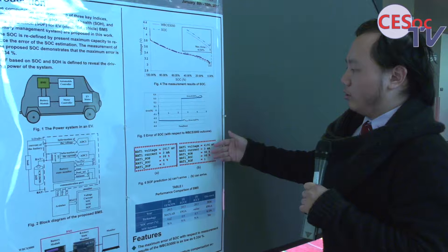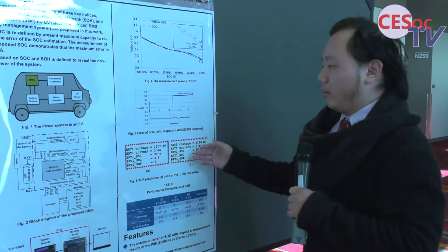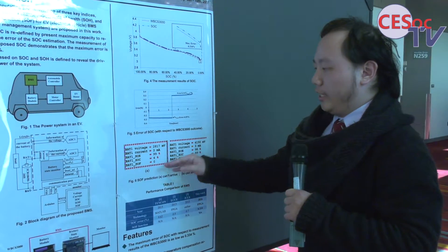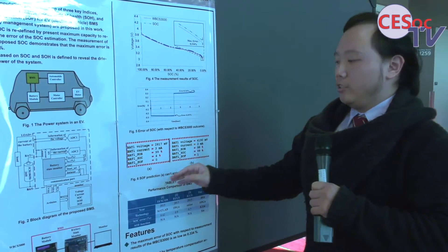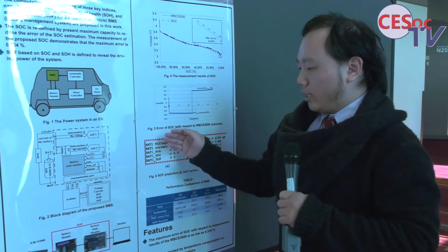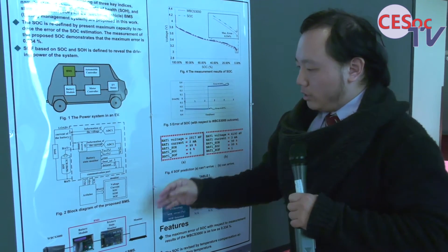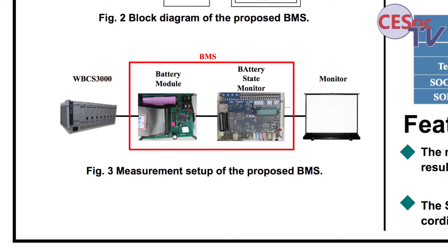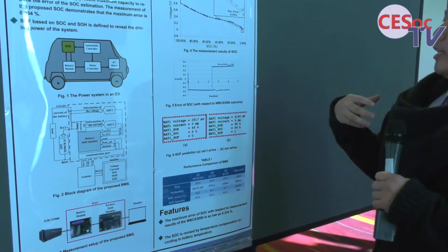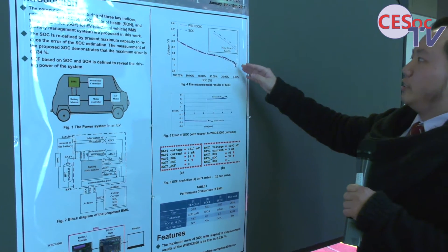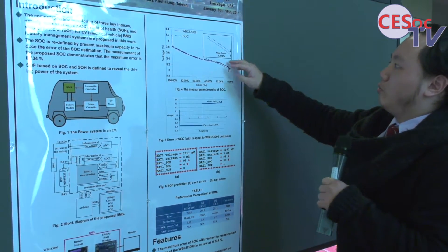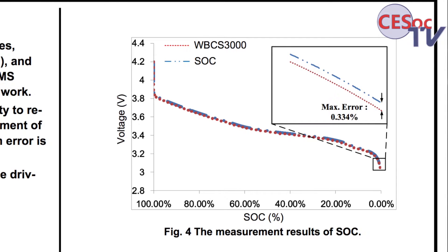We used an FPGA and WBC 3000 to test it. The error is less than one percent — specifically 0.34 percent — which is very low.